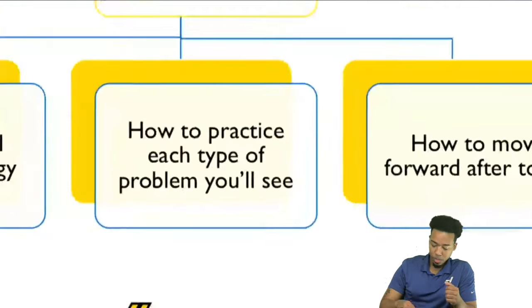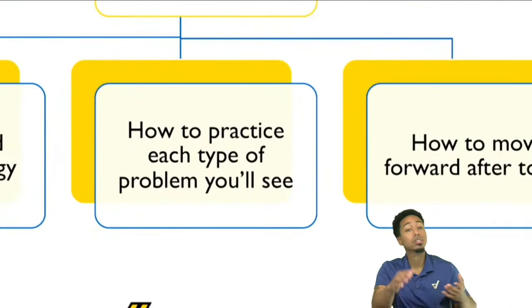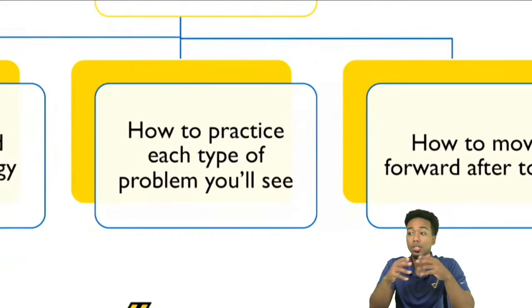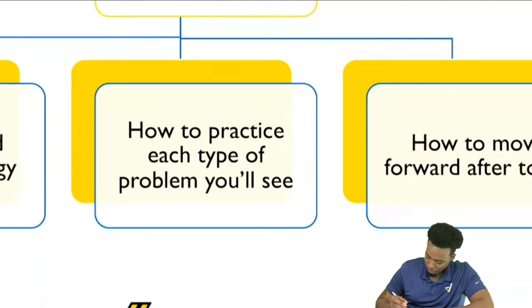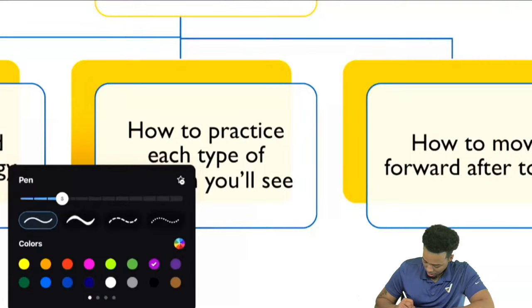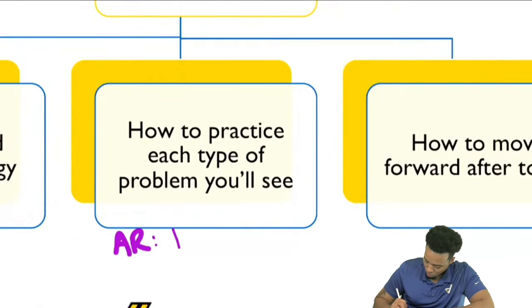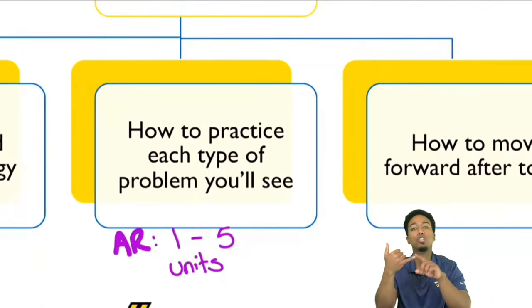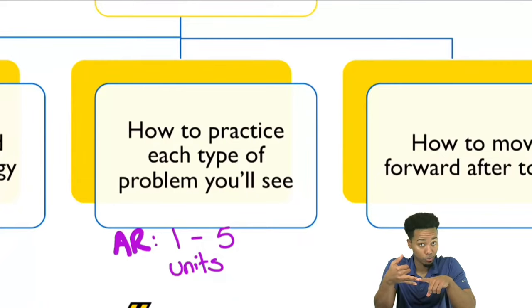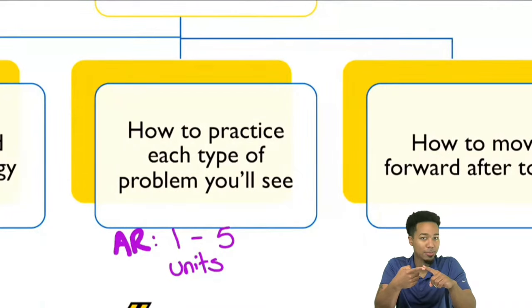Number two: how to practice each type of problem you'll see in today's class. We're going to see a variety of questions. For those of you in the program, this class is purely arithmetic reasoning — units one through five. That's general word problems, proportion word problems, unit conversion word problems, percent word problems, and fan favorite: distance rate time word problems.